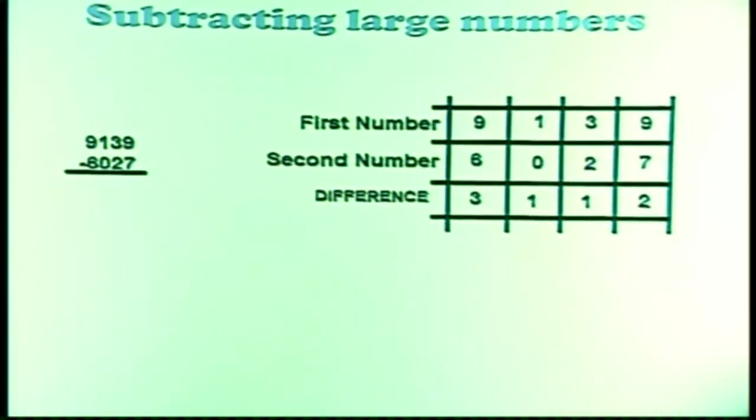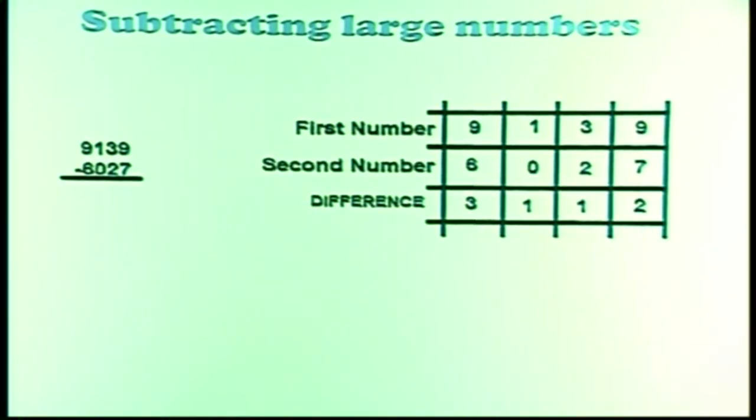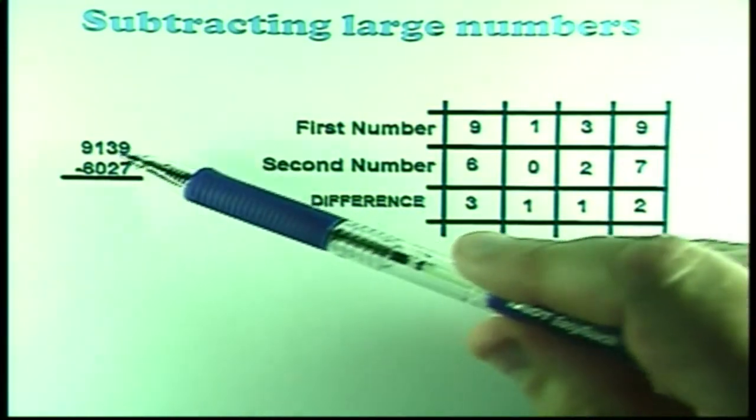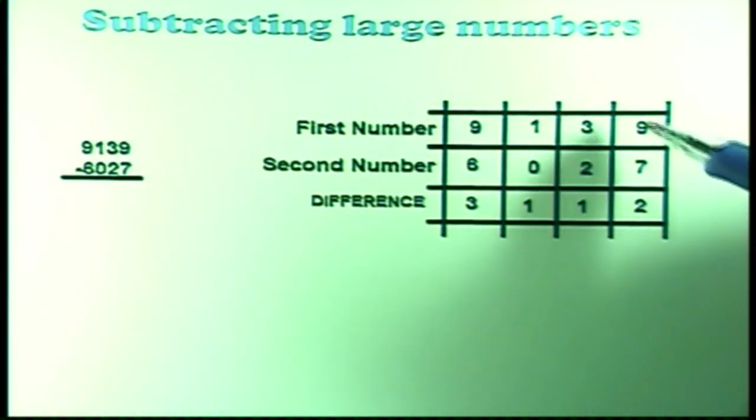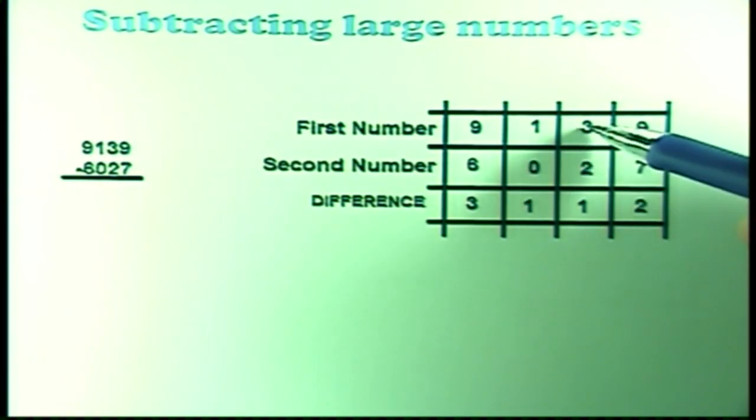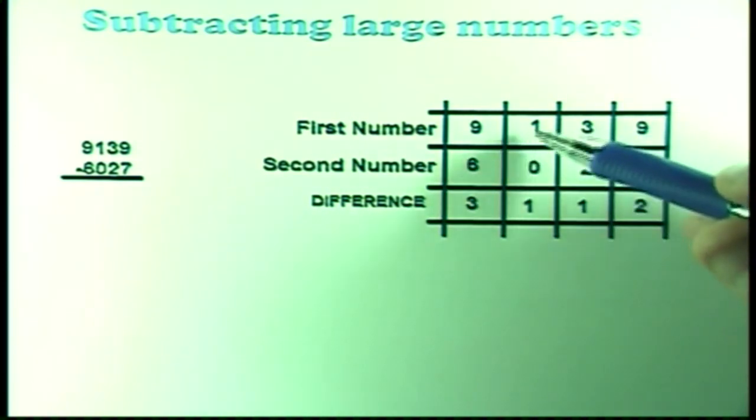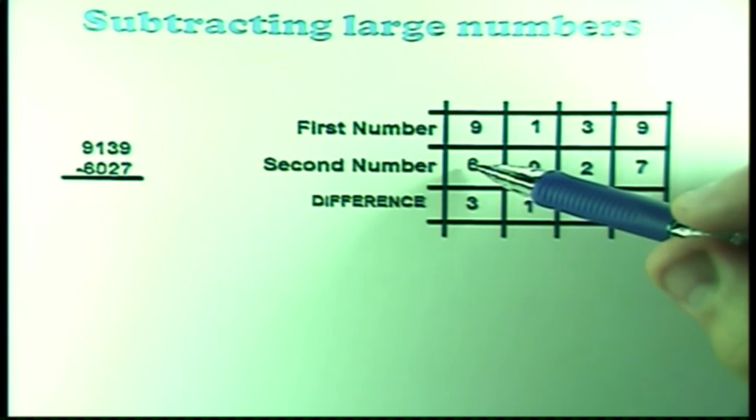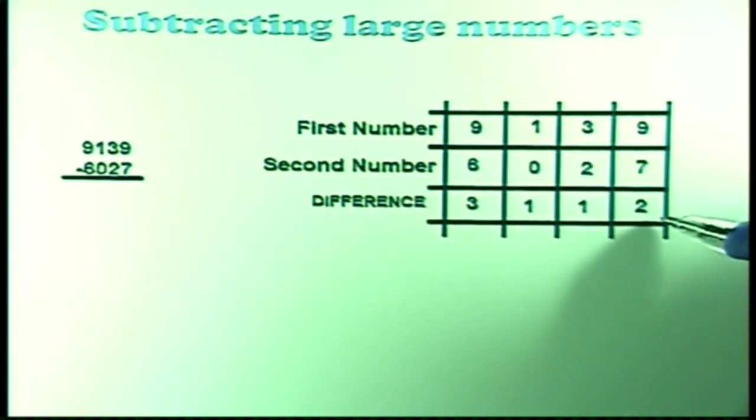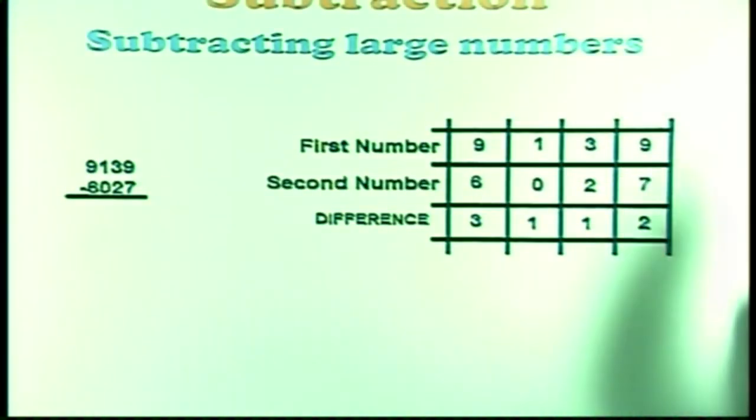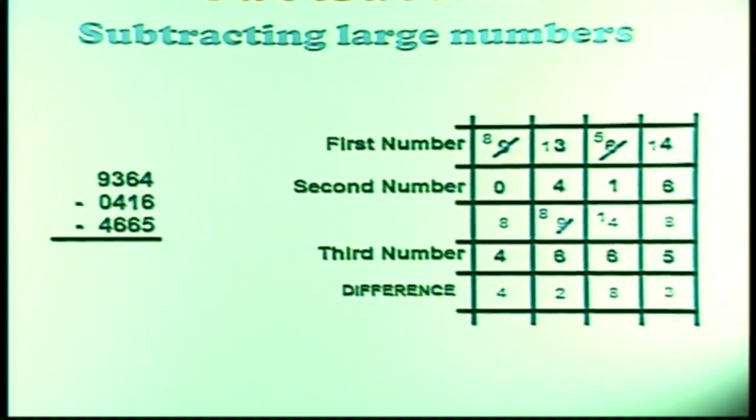Now we're going to do subtracting using large numbers. Let's see what we can find out here. I have 9139 minus 6027. Okay. So what we've got here, I put 9139 in the top row, 6027 in the bottom row. And if I take 7 away from 9, that leaves 2. We could do that using our subtraction grid we did earlier. 3 minus 2 leaves 1. 0 minus 1 leaves 1. And then take 0 away from 1 and you've got 1. 6 subtracted from 9 leaves 3. So the difference would be 3112.